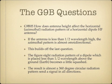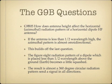How does antenna height affect the horizontal azimuthal radiation pattern of a horizontal dipole HF antenna? If the antenna is less than one half wavelength high, the azimuthal pattern is almost omnidirectional. The figure eight radiation pattern of a dipole placed less than a half wavelength above the ground becomes squashed, making it more circular. The result is almost a 360-degree circular radiation pattern, sending a signal in all directions — omnidirectional.